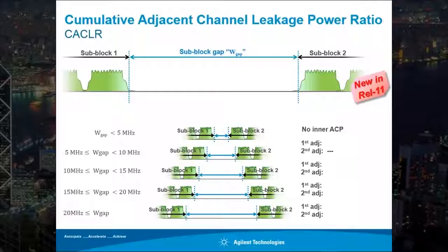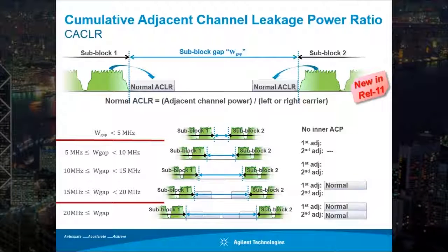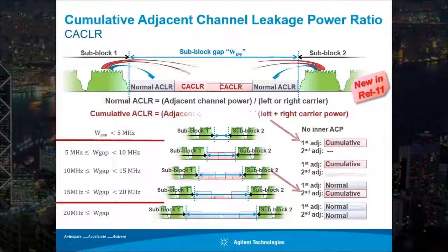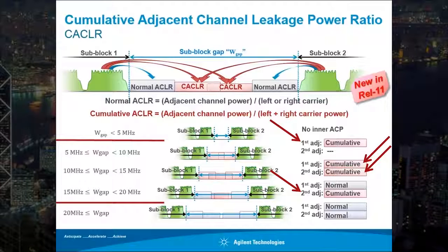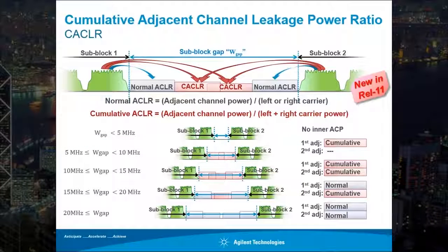In the case of ACLR, depending on the width of the sub-block gap, the leakage from carriers from both sides of the gap can overlap — this is what cumulative ACLR measures. As you can see here, if the gap is greater than 5 MHz and less than 20 MHz, either one or both of the inner offsets will be cumulative. For our demonstration, we will use an 18 MHz sub-block gap, so the second offset will be cumulative.